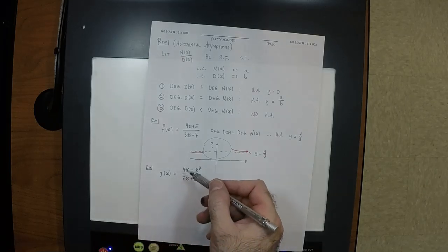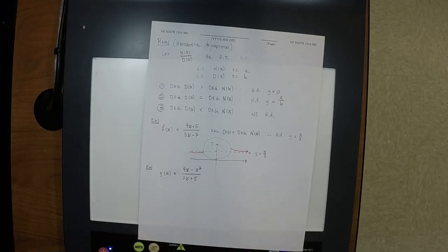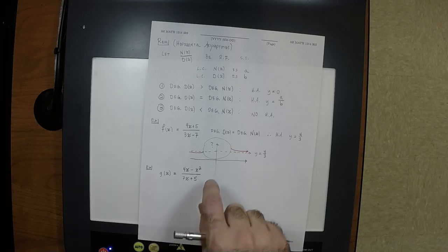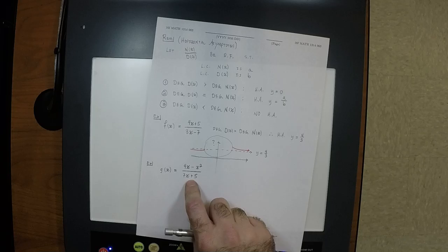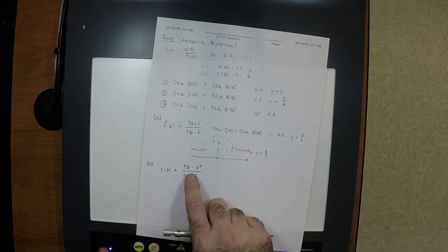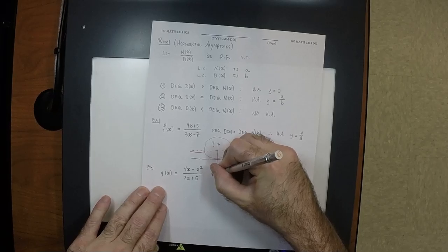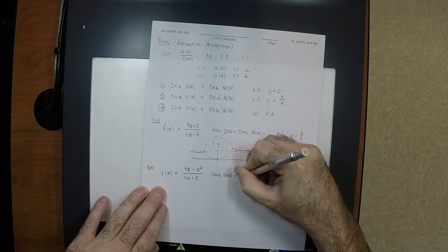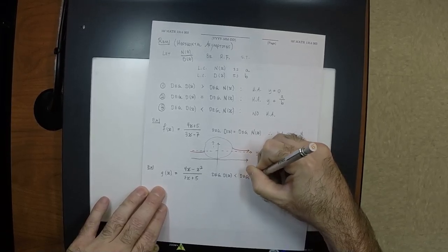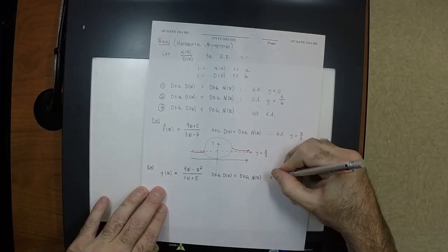How about g of x equals 4x minus x squared divided by 7x plus 5? The degree of the denominator is 1 and the degree of the numerator is 2, so we're in the case where the degree of the denominator is less than the degree of the numerator. In that case, there is no horizontal asymptote.